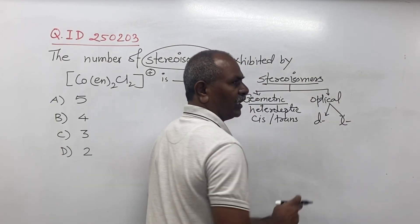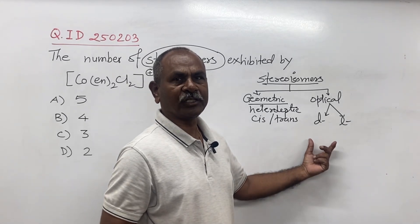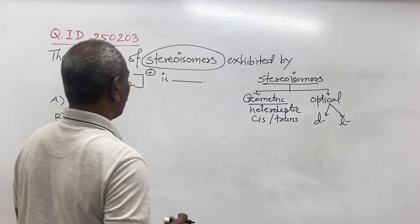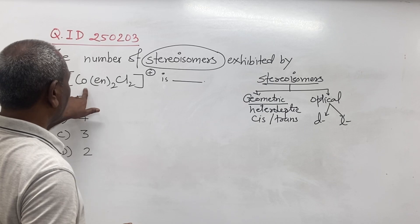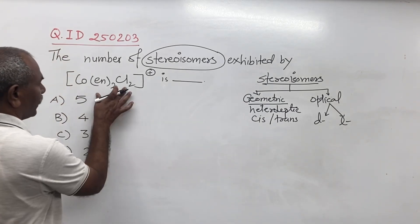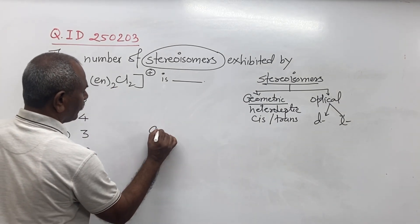Optical isomers are of two types: dextro and levo. Both this pair is called enantiomer. Okay, now we can draw the structure of the given complex. It is an octahedral complex Co.